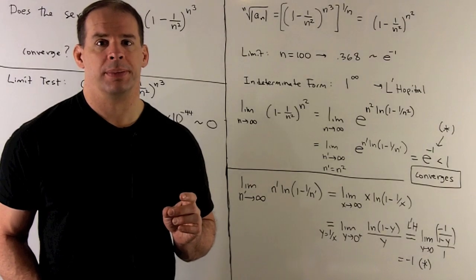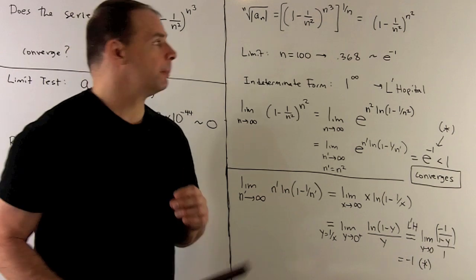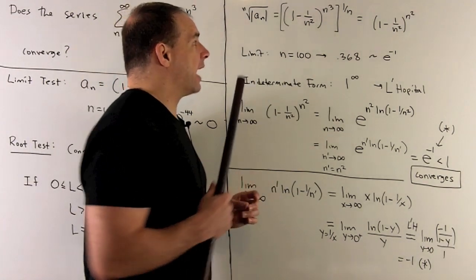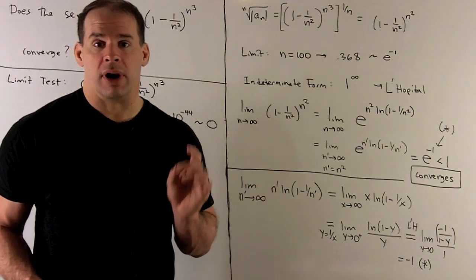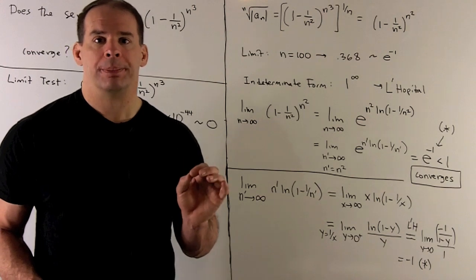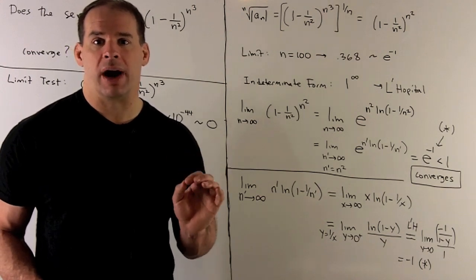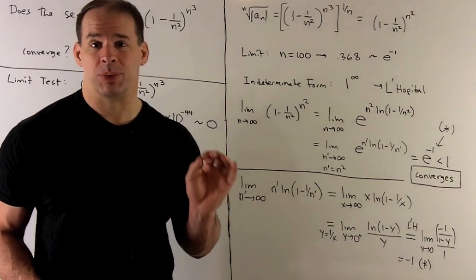Let's set up our root test. We'll consider our general term, we'll take its absolute value. 1/n² is a really small number, so 1 - 1/n² is going to be close to 1. So it's positive.